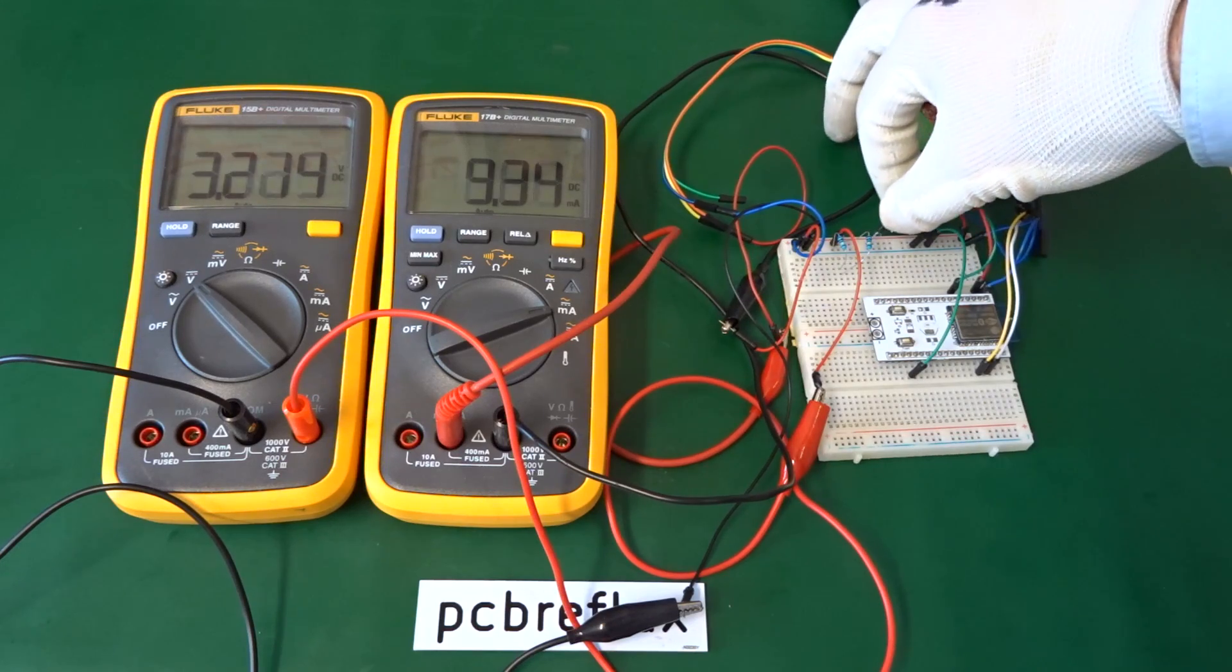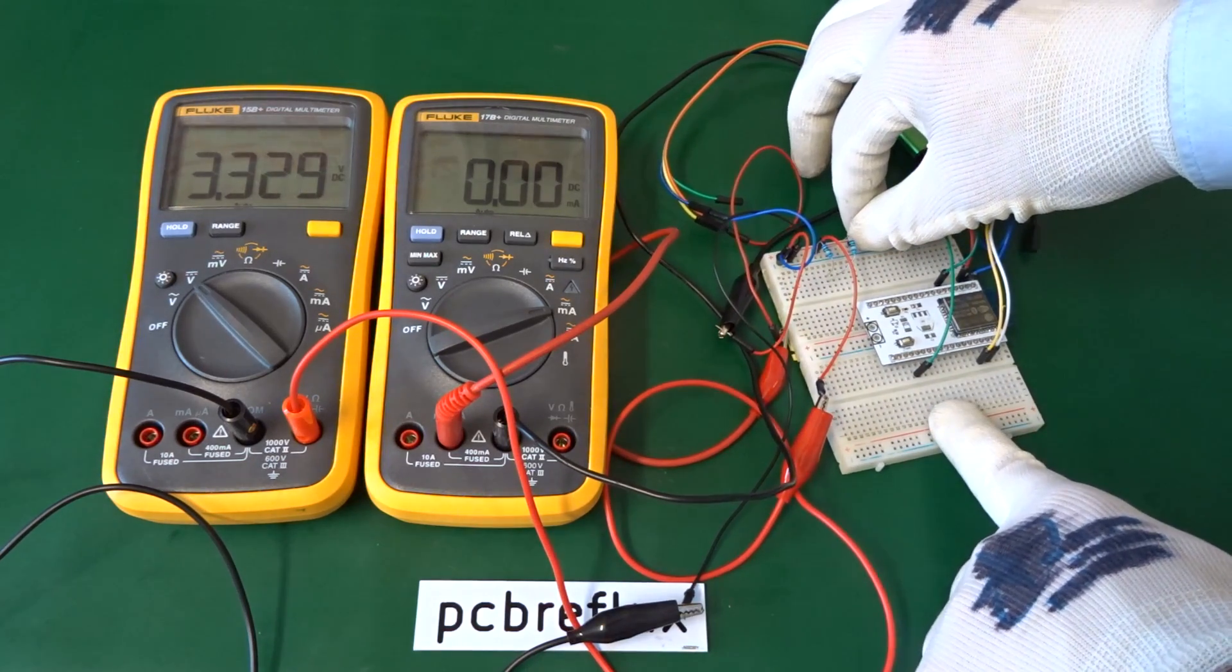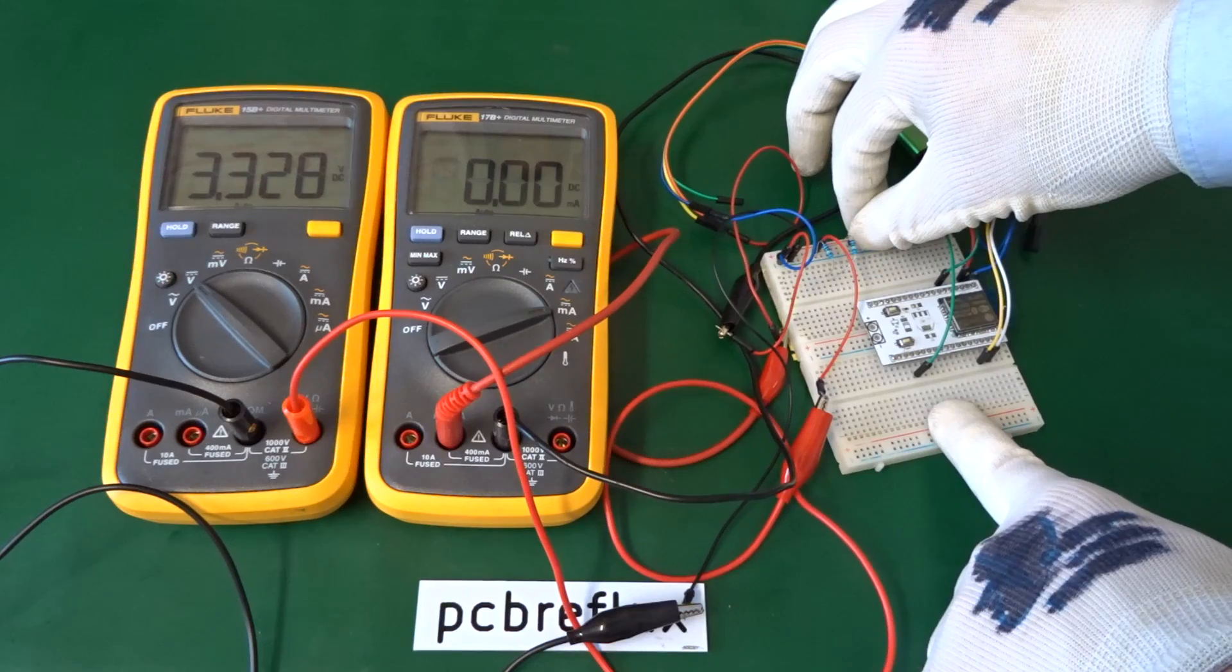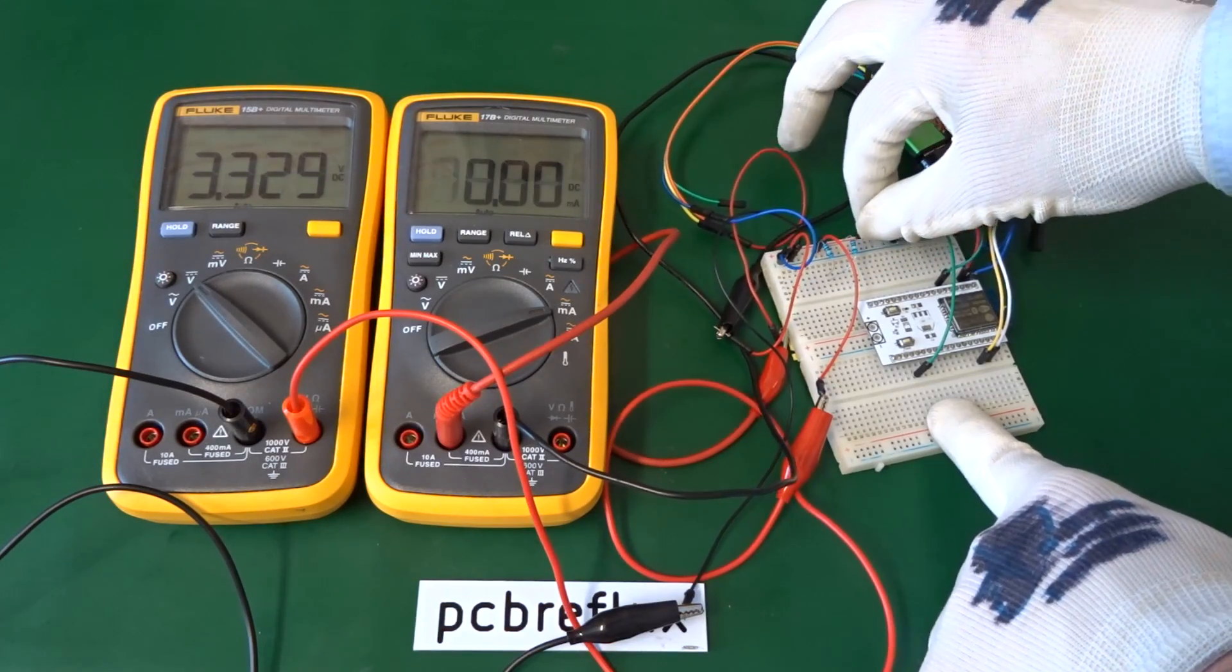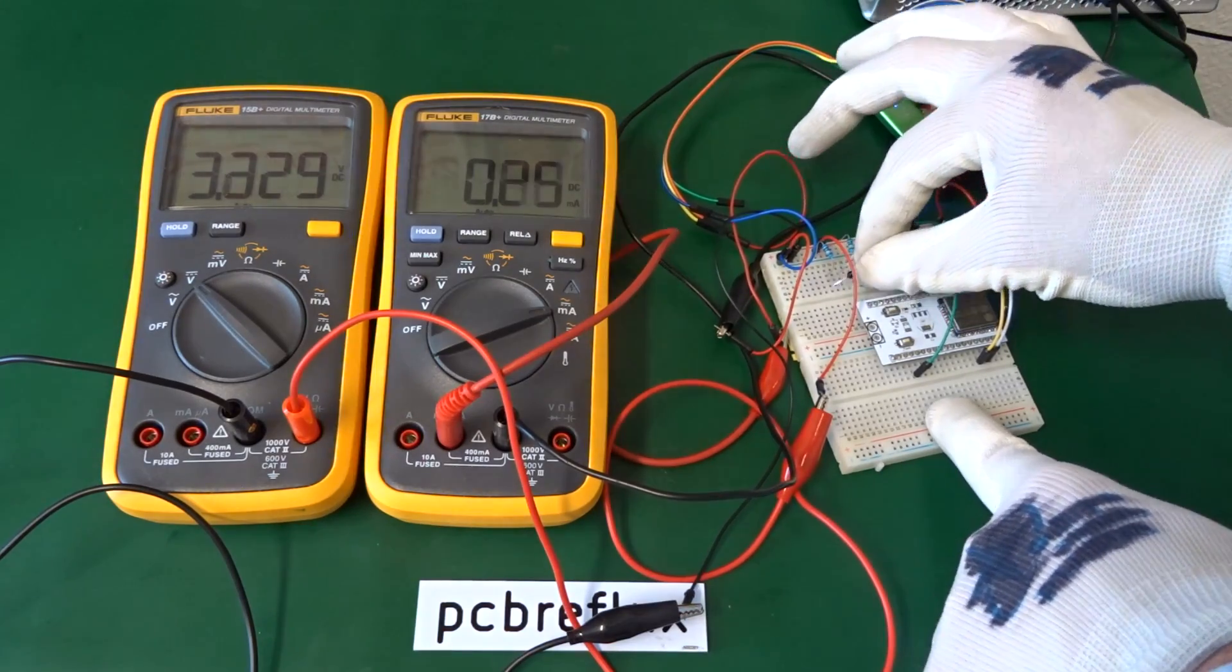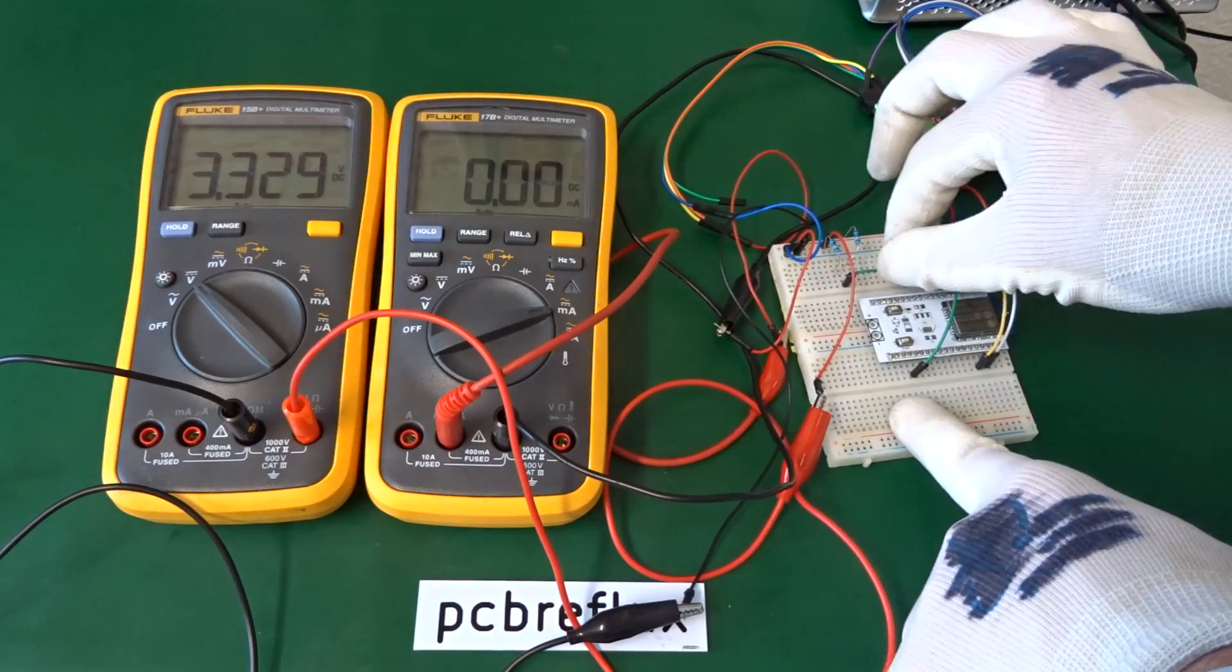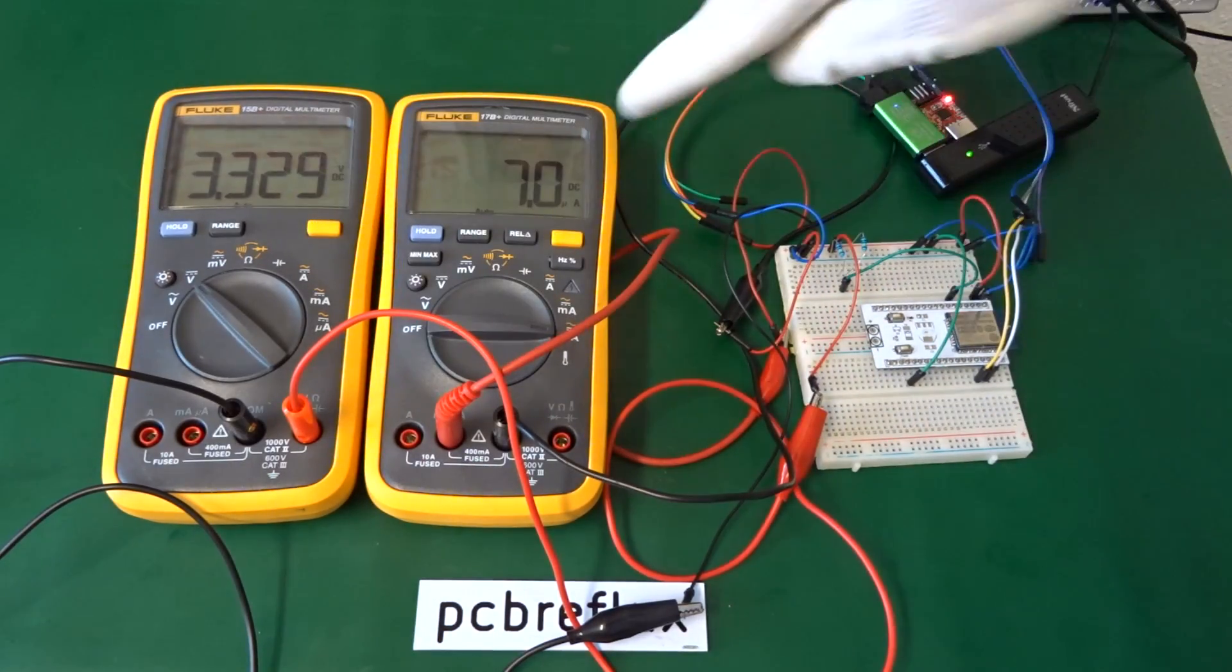And so you see the measurements are switching between different values. And then after reaching the deep sleep mode again, we see our 7 to 10 microamperes, sometimes less, sometimes a little bit more.